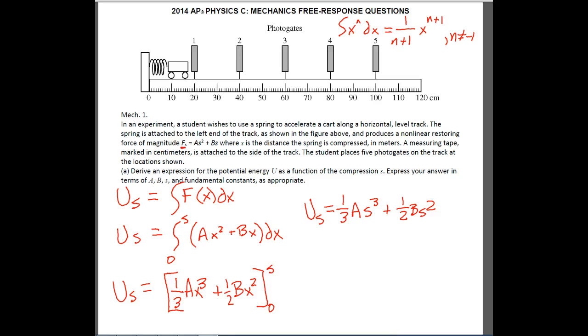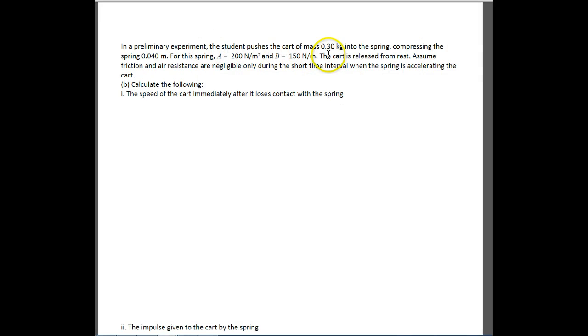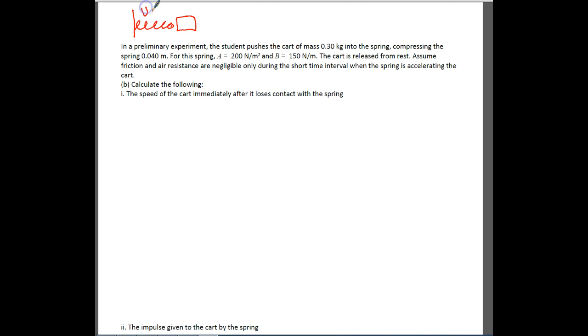Now for part B. A student pushes the cart into the spring, compressing it by distance S. A = 200 N/m², B = 150 N/m, mass = 0.3 kg, compression = 0.04 m. The cart is released from rest; friction and air resistance are negligible. We want to find the speed just after the cart loses contact with the spring. At that point, all potential energy converts to kinetic energy.